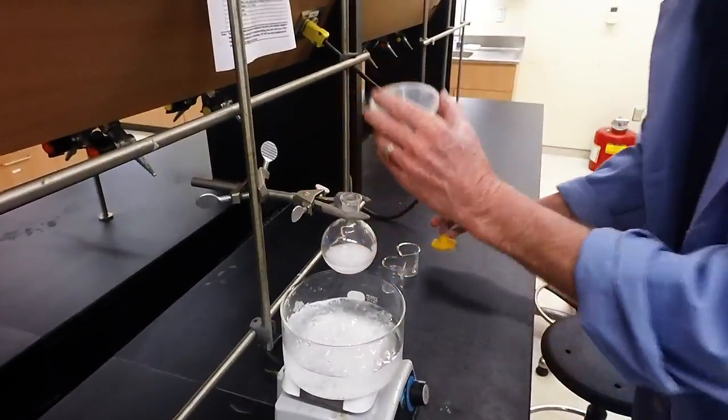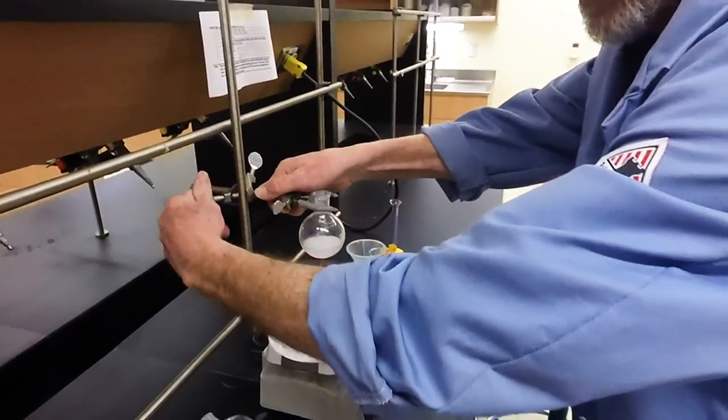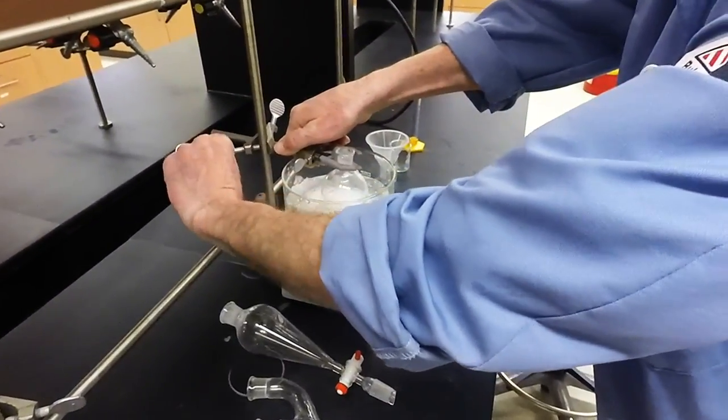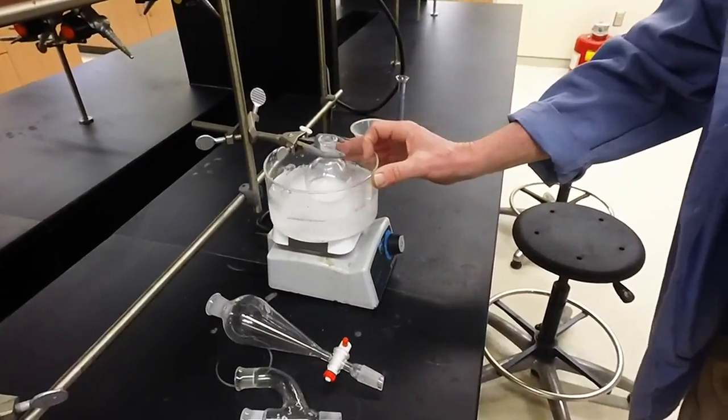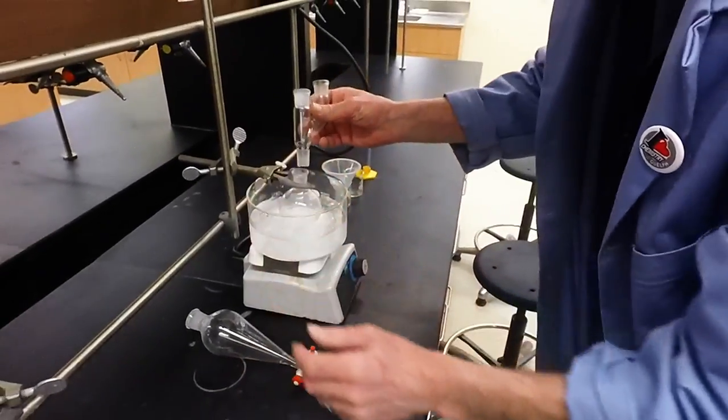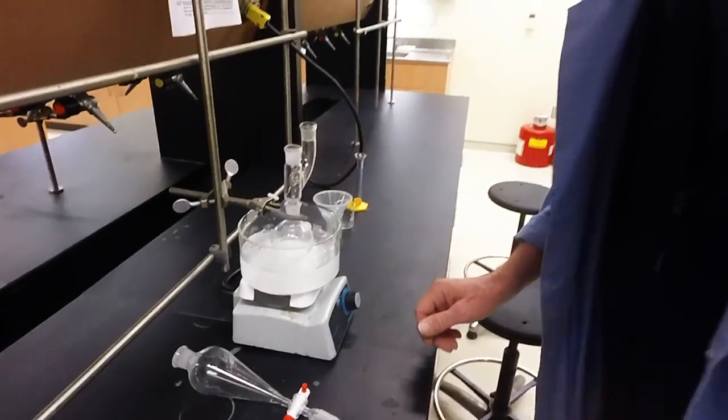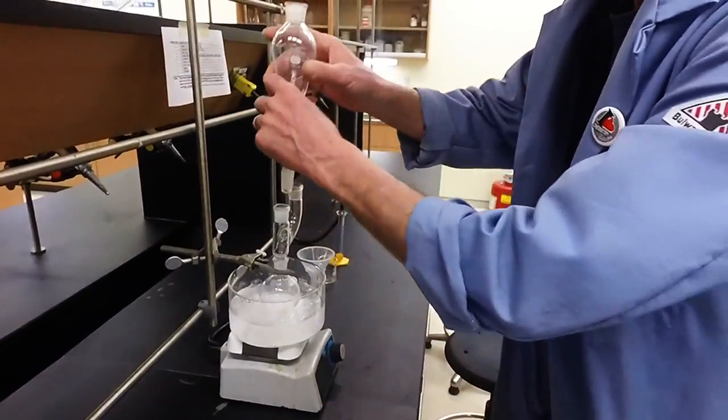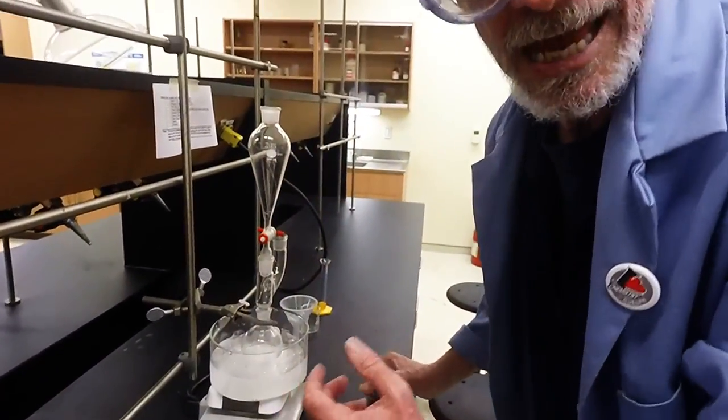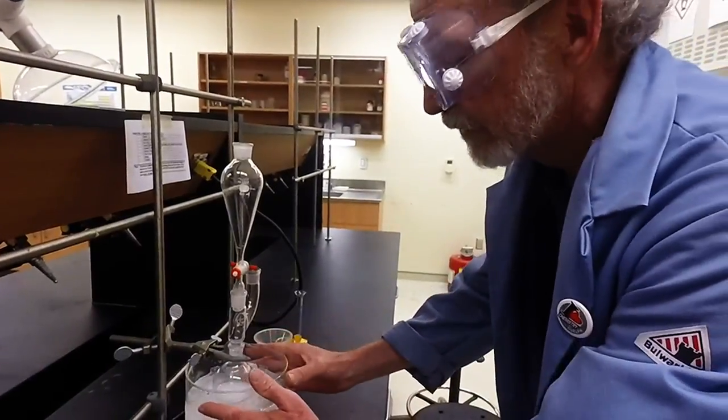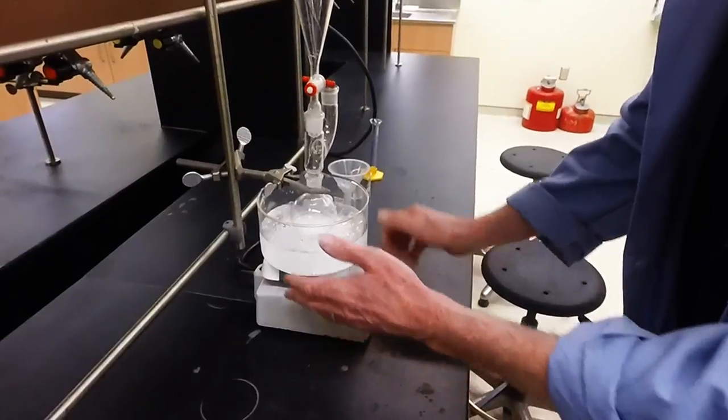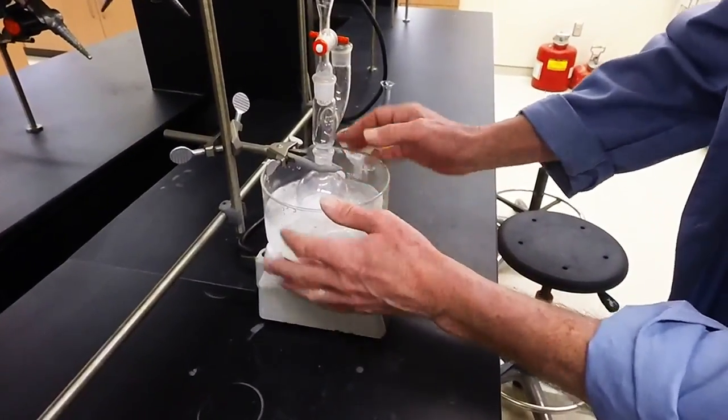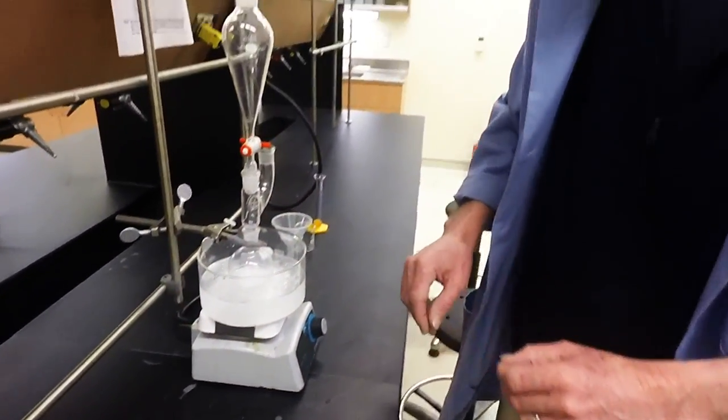So now would be a good time, let's get our ice bath prepared and stirring. Our reaction involves adding sulfuric acid to make it go. Sulfuric acid, when it's added to anything, generates a lot of heat. So cooling, very important. Stirring, not too fast or the stir bar will just dance around. Okay, and so we're ready.